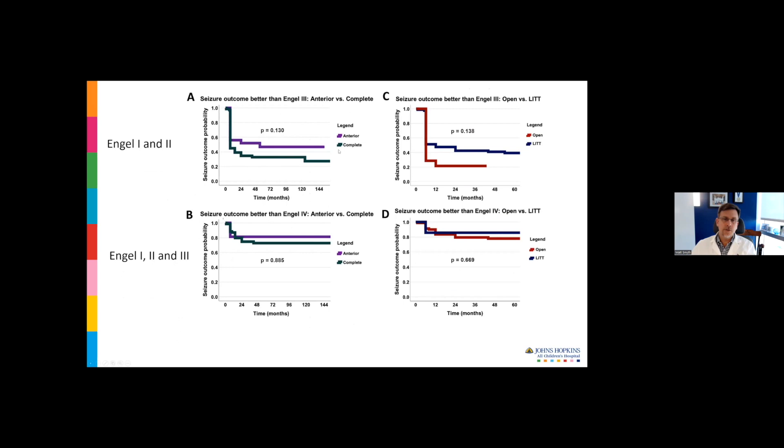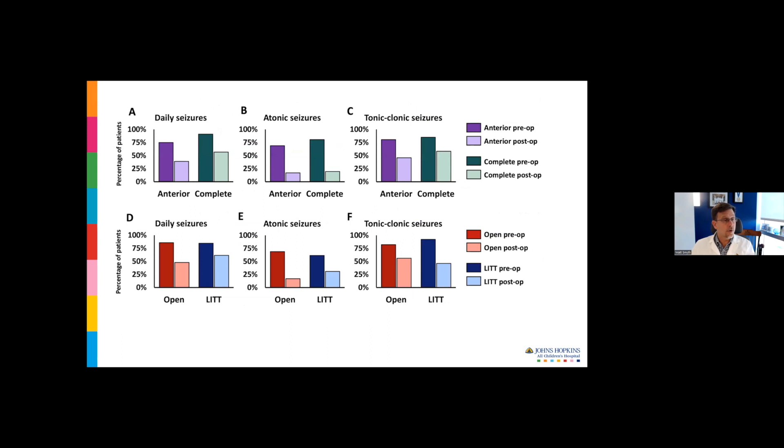A couple Kaplan-Meier curves. The top one is showing Engel class one and two combined—patients who had complete relief or near complete relief of their targeted seizure type. Statistically, no significant difference, but a trend for a little bit better with anterior and a little bit better with lit. But if you look at all Engel classes considered a good outcome, an Engel class three for a callosotomy is a good outcome. What we see is that 70 to 80% do well in both cohorts, whether it's anterior or complete, whether it's open or lit.